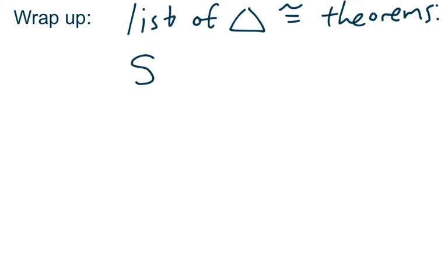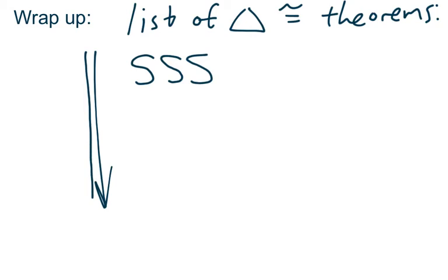One last thing before we go: like I said at the beginning of the lesson, we're going to learn shortcuts to proving that two triangles are congruent — that's what the rest of this chapter is about. I want you to keep a list of shortcuts in your notes, because you'll need to have all of these memorized. Right now your list is short — the only one you have is the Side-Side-Side Postulate. We'll add to this list through the rest of the chapter. Put it somewhere in your notes that's easy to find, because this list and this list only can be used to show that two triangles are congruent. Have a good night!